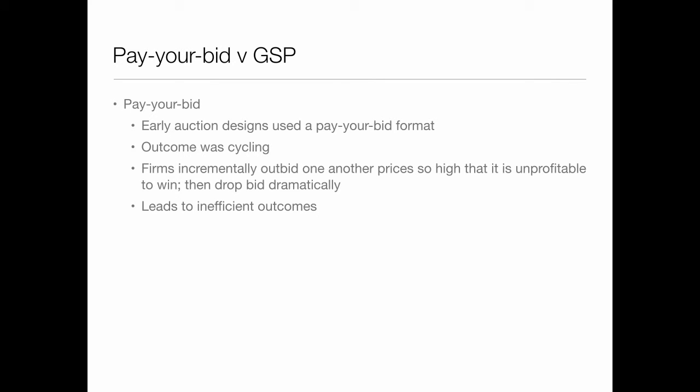You can have pay-your-bid versus a generalized second price auction — you've already done an exercise on this. Pay-your-bid is the early auction format. The outcome was lots of cycling: firms incrementally outbid one another. Prices got so high that it was unprofitable to win, and then they'd drop their bid automatically. All these algorithmic bids led to inefficient outcomes.